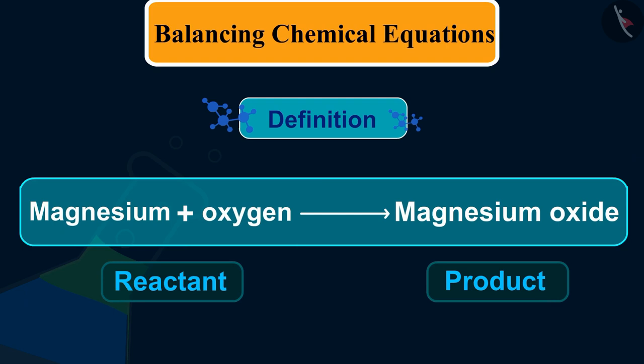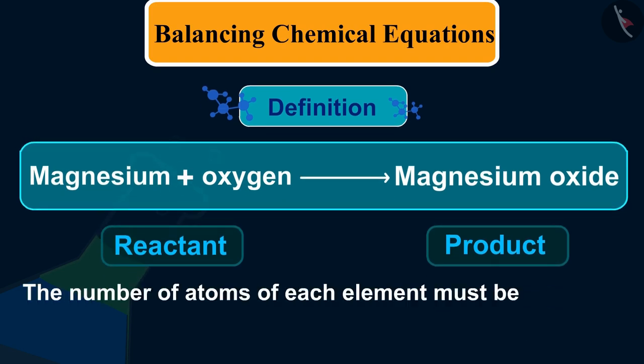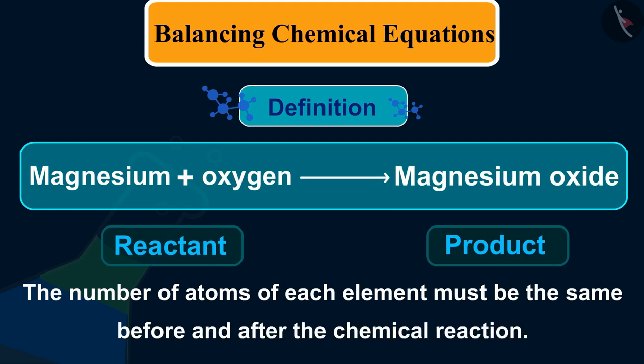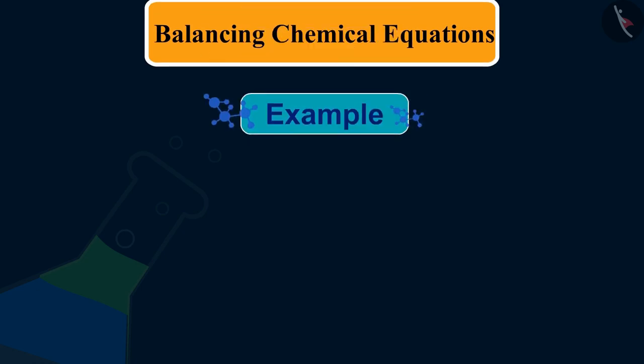The total mass of the elements present in the products of a chemical reaction has to be equal to the total mass of the elements present in the reactants. It would not be wrong to say that mass is neither created nor destroyed in any chemical reaction.